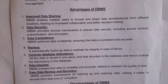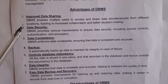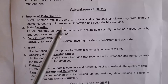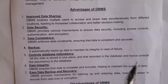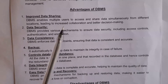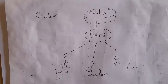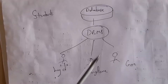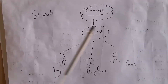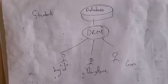The first advantage is improved data sharing. DBMS enables multiple users to access and share data simultaneously from different locations, leading to increased collaboration and better decision making. For example, there are three users — one user is from Hyderabad, one from Bangalore, and one from Goa. By using a database management system, all users can communicate by sharing data, regardless of their particular location.